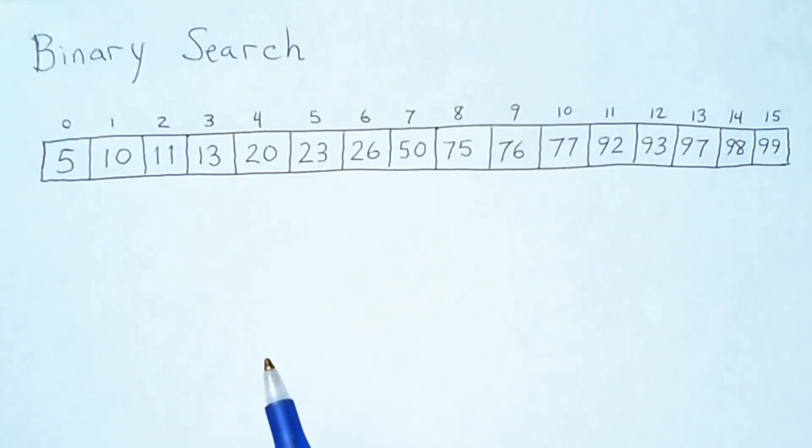Binary search is an algorithm for finding or checking for the presence of a specific value in a sorted array, like this one. The logic of the algorithm depends on the array being sorted, and use of an array allows the algorithm to be efficient.